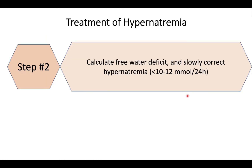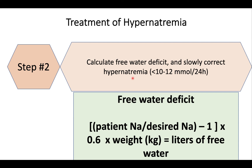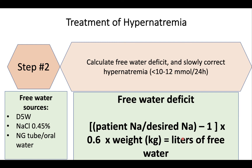Step number two: once you've corrected hypovolemia, calculate the free water deficit and slowly correct the hypernatremia over time. Since this patient is hypernatremic, there is likely a free water deficit. By giving back this free water deficit, we can correct sodium gradually. The formula is: (patient sodium ÷ desired sodium − 1) × 0.6 × body weight in kg. The result gives you liters of free water to administer. For example, starting at 185 and targeting 150, you subtract one, multiply by 0.6 and body weight.